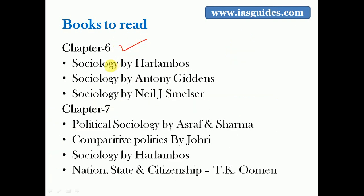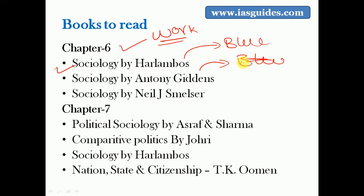Chapter six deals with work and economic sociology. The books to read are Haralambos's blue colour book, the Anthony Giddens book, and Economic Sociology by Neil J. Smelser - a very standard book available in the market. If you find it difficult or costly to buy, you can have a photocopy made. That covers economic sociology.